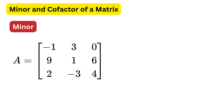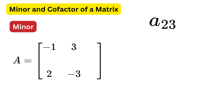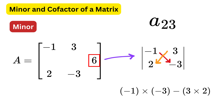For example, if we are looking at the element A sub 2,3, then we remove row 2 and column 3 from the original matrix, and whatever small matrix remains, we take the determinant of that. That result is called the minor of A sub 2,3. In this case, the minor of this element will be the determinant of minus 1, 3, 2, and minus 3, which will be 3 minus 6, or minus 3.